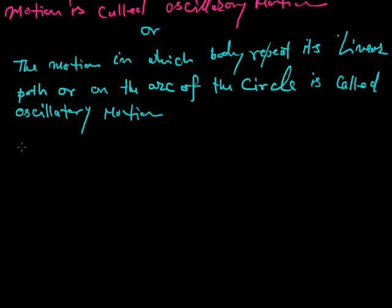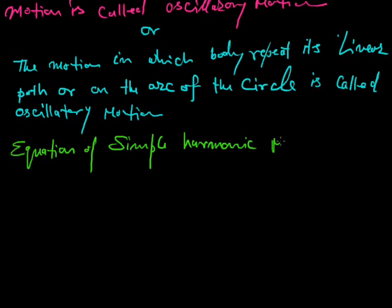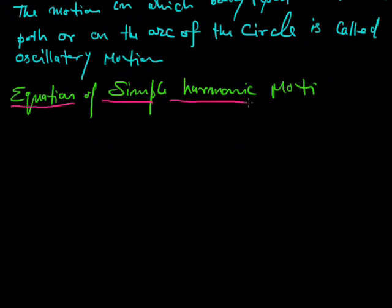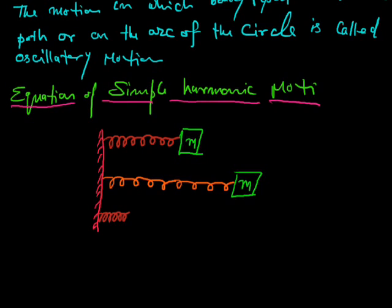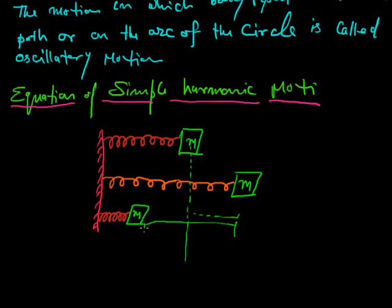The equation of simple harmonic motion: consider a spring attached to a rigid wall with a body of mass M. When the spring is stretched or compressed, it executes simple harmonic motion. This is the main (mean) position of the spring — it moves up to the extreme position and comes back to the main position again, executing simple harmonic motion.